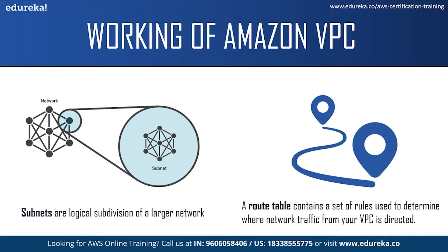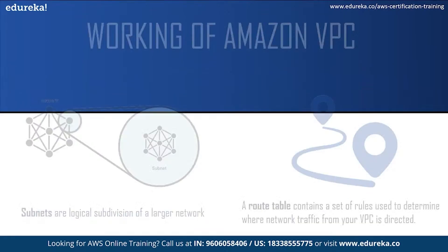Each route in a route table specifies the range of IP addresses where you want the traffic to go, which is the destination, and the gateway — the network interface or connection through which to send the traffic — which is the target.